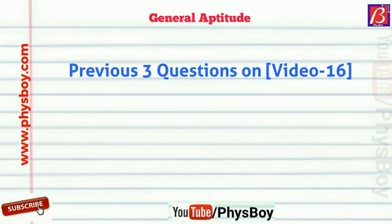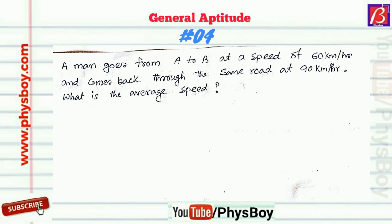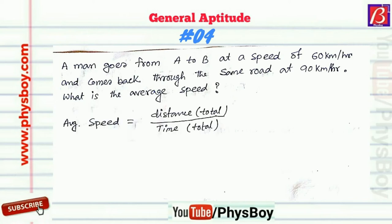Now I am going to discuss the fourth question of general aptitude from GATE 2018. The question was: a man goes from A to B at a speed of 60 km per hour and comes back through the same route at 90 km per hour. What is the average speed? Average speed can be written as total distance divided by total time.